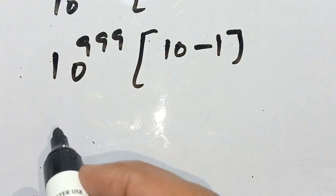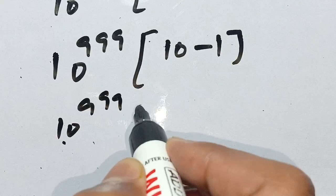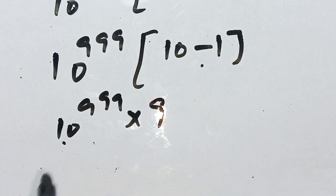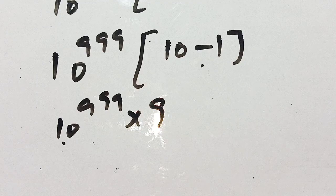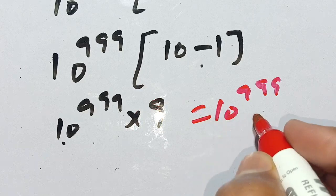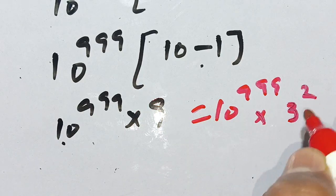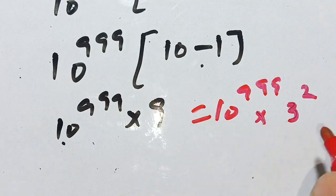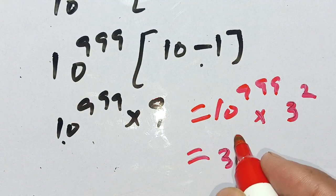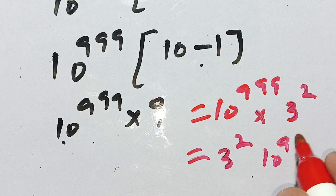In the next step we can write this as 10 raised to power 999 times 9. Now 9 can be written as 3 raised to power 2. Thus our result is equal to 3 raised to power 2 times 10 raised to power 999 in the simplest form.